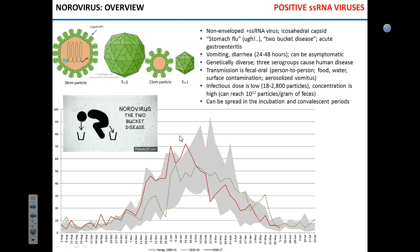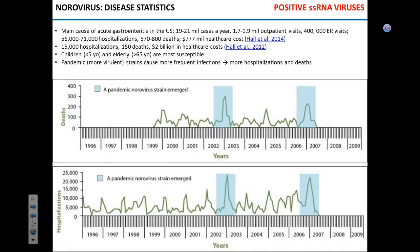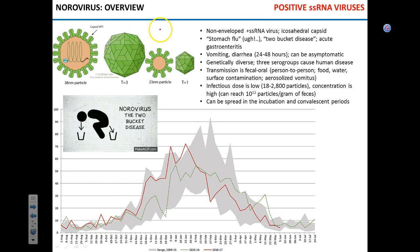The last virus to chat about is norovirus. It's sometimes called the 'two bucket disease.' It's a non-enveloped, positive-strand RNA virus with an icosahedral capsid and RNA inside. It can also produce defective particles — particles that do not package any RNA but can still cause an immune response.